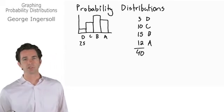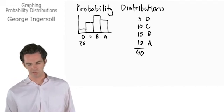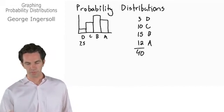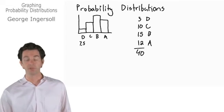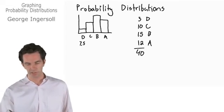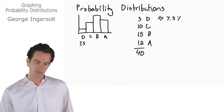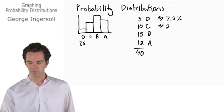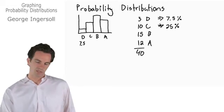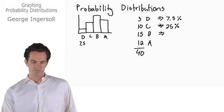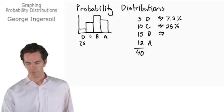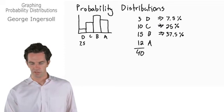To convert these into percentages, we have to multiply by 100 over 40, so multiply each of these by 2.5. So this is going to equal 7.5 percent D's. This is going to be 25 percent C's. 15 times 2.5 is 37.5 percent B's, and 30 percent A's.